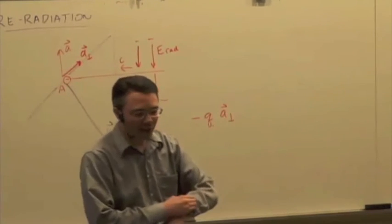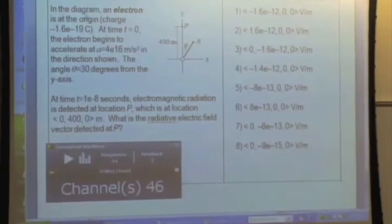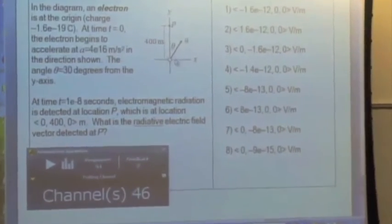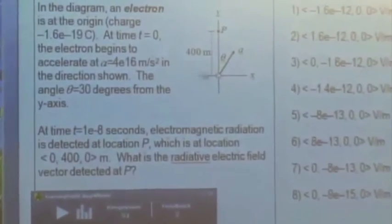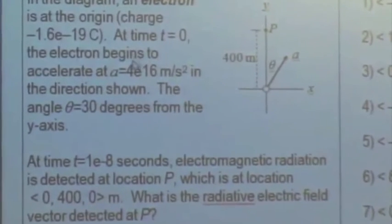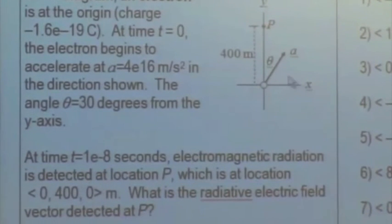All right. Let's see how much time we have. Let's take the quiz. So, here we have a diagram. In this diagram, we have an electron at the origin here. At time t equals zero, the electron begins to accelerate in this direction at four times ten to the sixteenth meters per second squared.